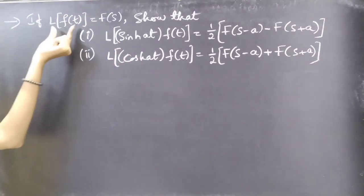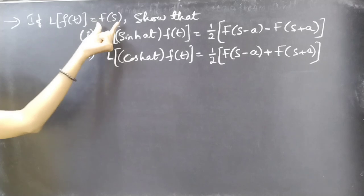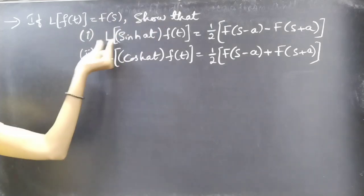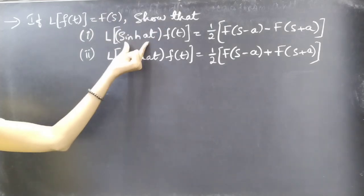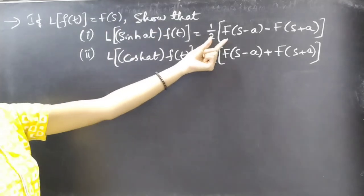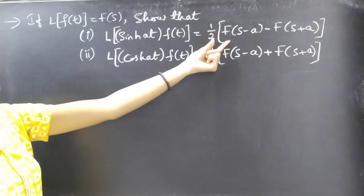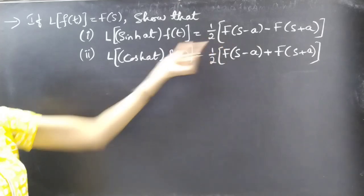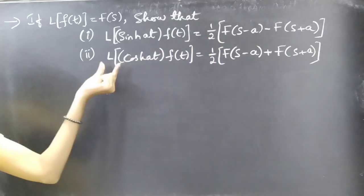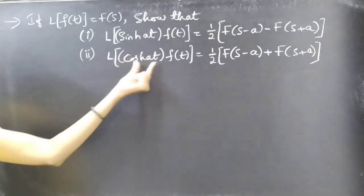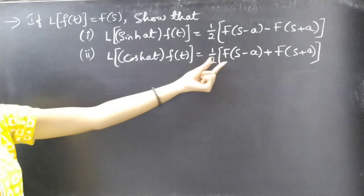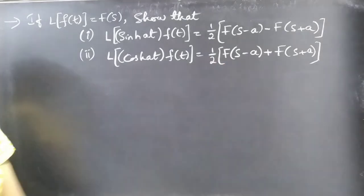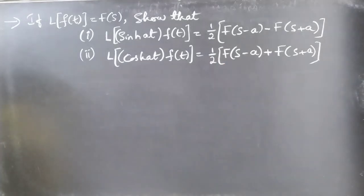Problem: If L{f(t)} = F(s), show that L{sinh(at) · f(t)} = (1/2)[F(s-a) - F(s+a)], and L{cosh(at) · f(t)} = (1/2)[F(s-a) + F(s+a)].